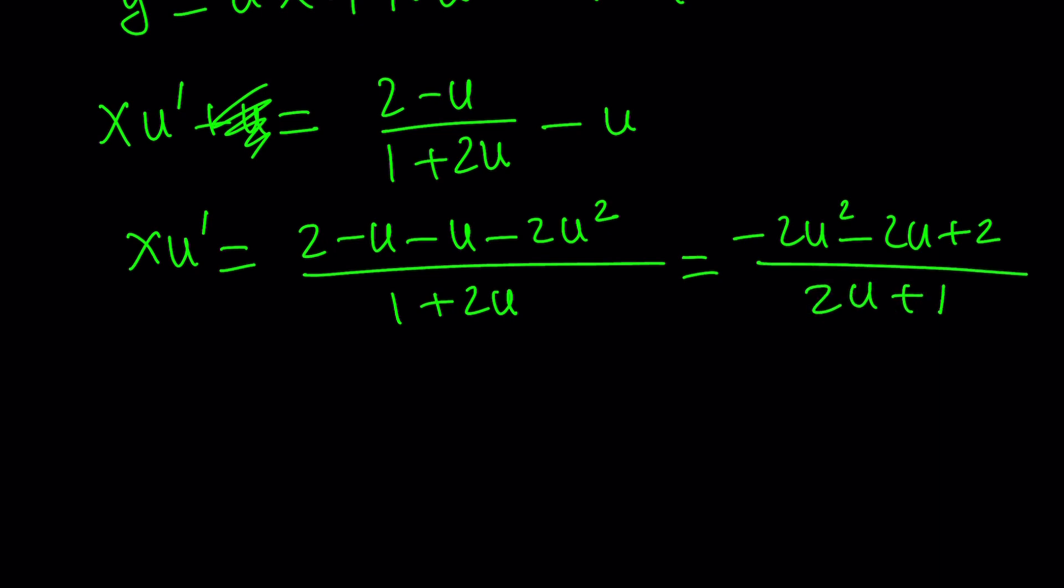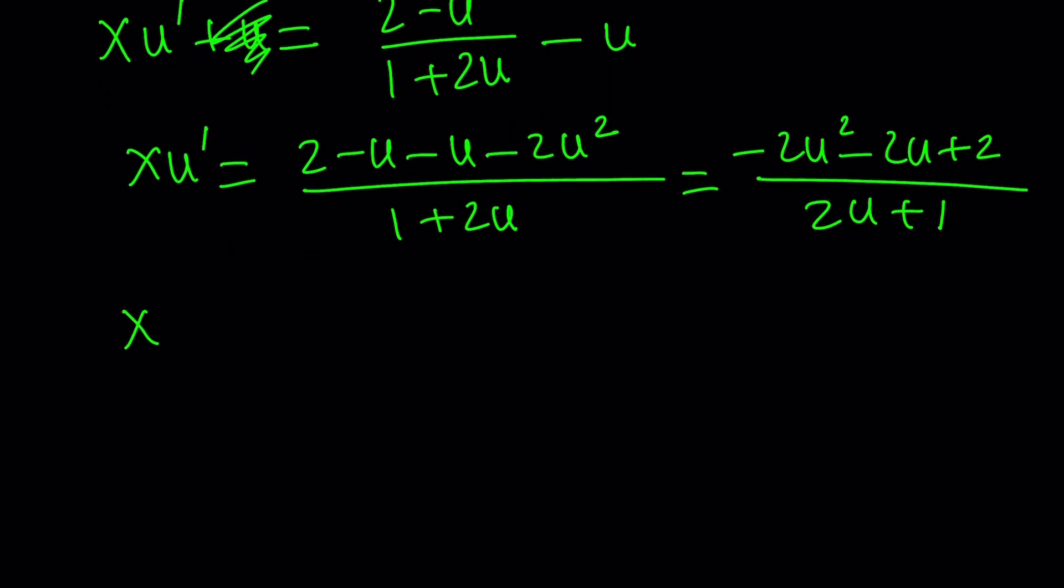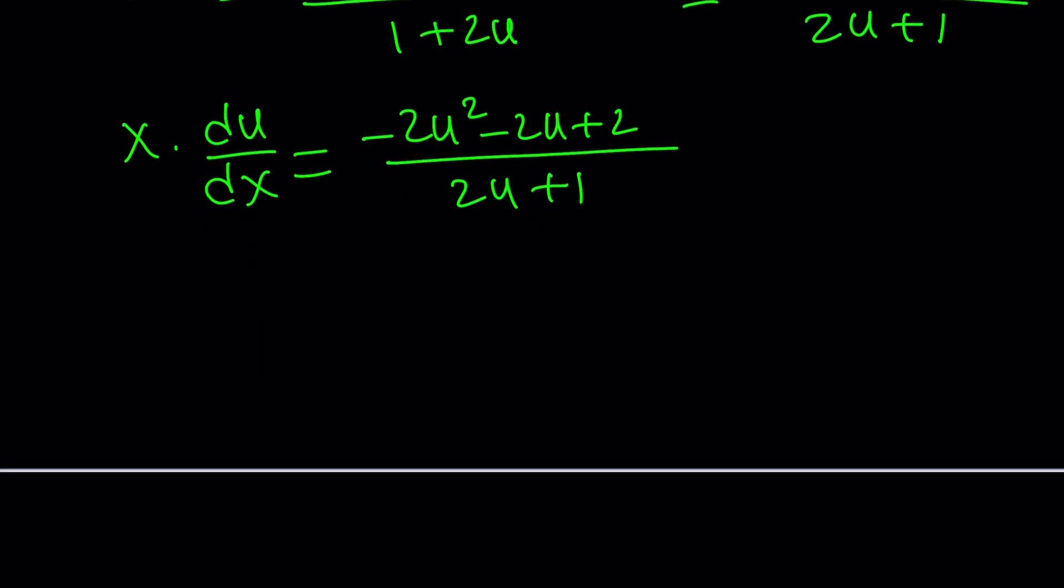And of course, I want to now write it as u prime as du over dx, because remember, I said u is a function of x, so u prime would be du over dx, and it'll equal this expression right here. Minus 2u squared minus 2u plus 2 divided by 2u plus 1. Now I want to put the x and dx on the right-hand side, so if you do the cross multiplication and all that stuff, you're going to end up with something like this.